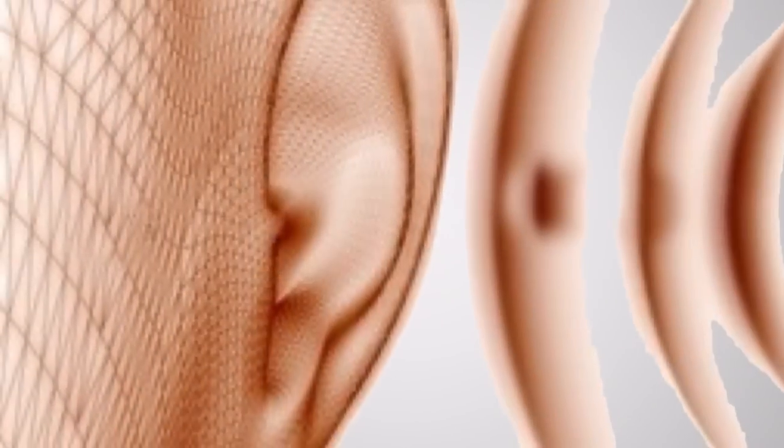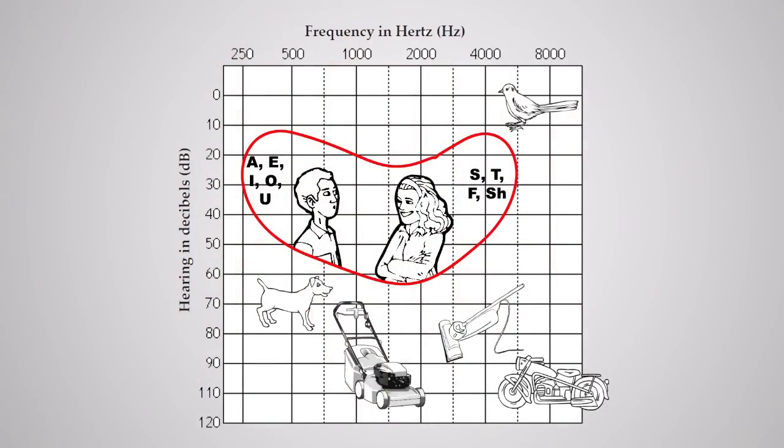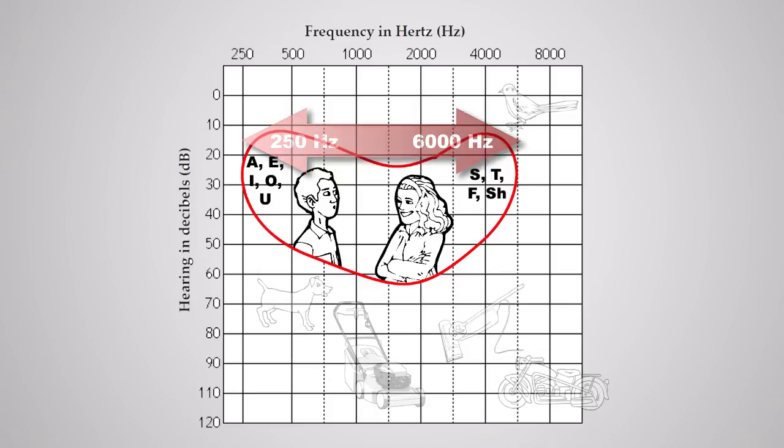The ability to understand speech is the prime function of a hearing aid. Human speech centers on frequencies between 250 Hz and 6,000 Hz. By amplifying the speech frequencies and filtering out the non-speech frequencies which contain noise, speech is more understandable.